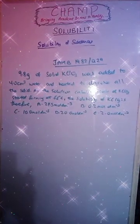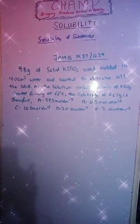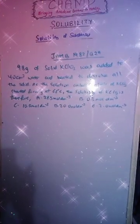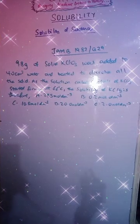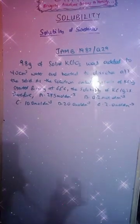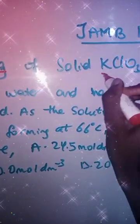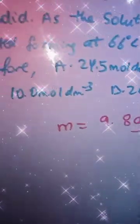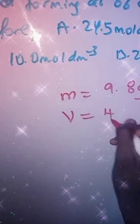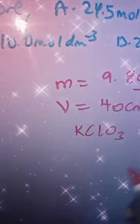Here is our next question — JAMB 1982 Question 29: 9.8 grams of solid potassium trioxychlorate(V), KClO₃, was added to 40 cm³ of water and heated to dissolve all the solid. As the solution cooled, crystals of KClO₃ started forming. The solubility of KClO₃ is therefore? You've been given mass = 9.8 g, volume = 40 cm³, and the substance is KClO₃. The molar mass of KClO₃: K = 39, Cl = 35.5, O₃ = 3 × 16 = 48.